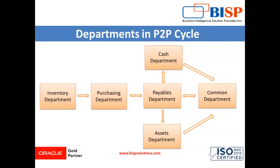The first step of the procure to pay process is to determine and define the business requirement. First, we identify the needs for products and services within our organization — identifying those goods and services which are in shortage in our inventory department.